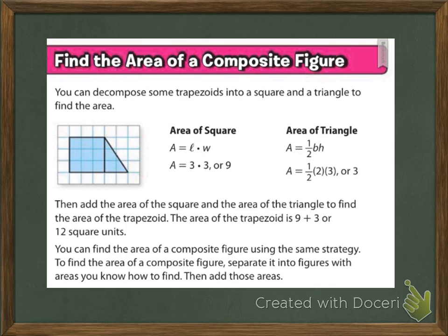To find the area of a composite figure, you can decompose some trapezoids into a square and a triangle. Instead of finding the area of a trapezoid directly, you can find the area of the square (or rectangle) and then the triangle, add those two spaces together, and that gives you the area of the trapezoid. The area of the trapezoid equals the area of the square plus the area of the triangle, which will be 12 square units.